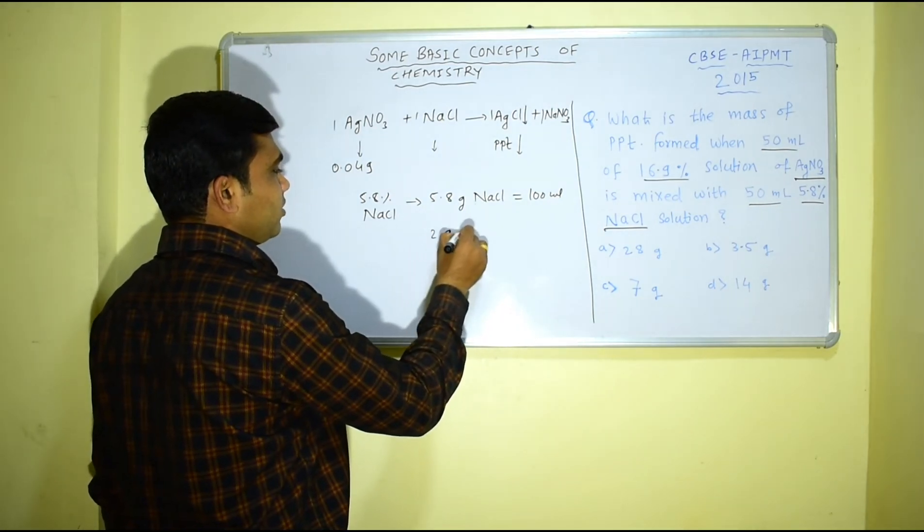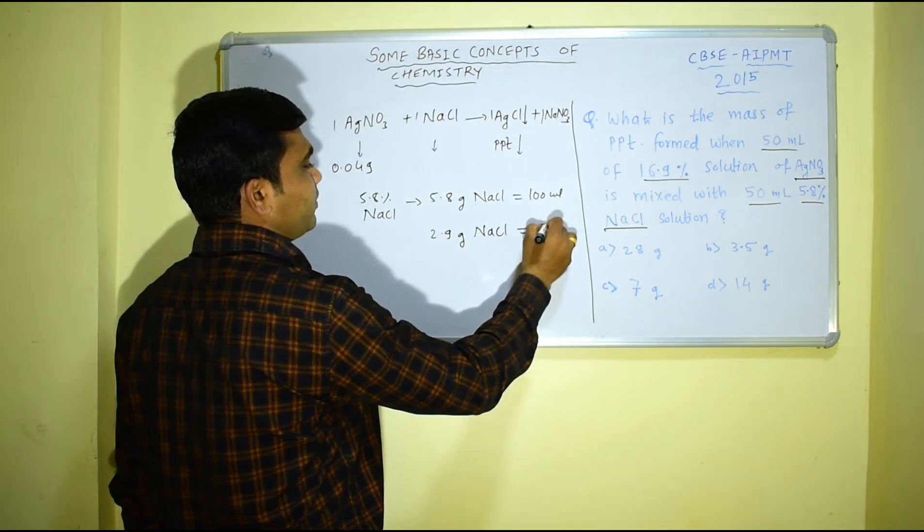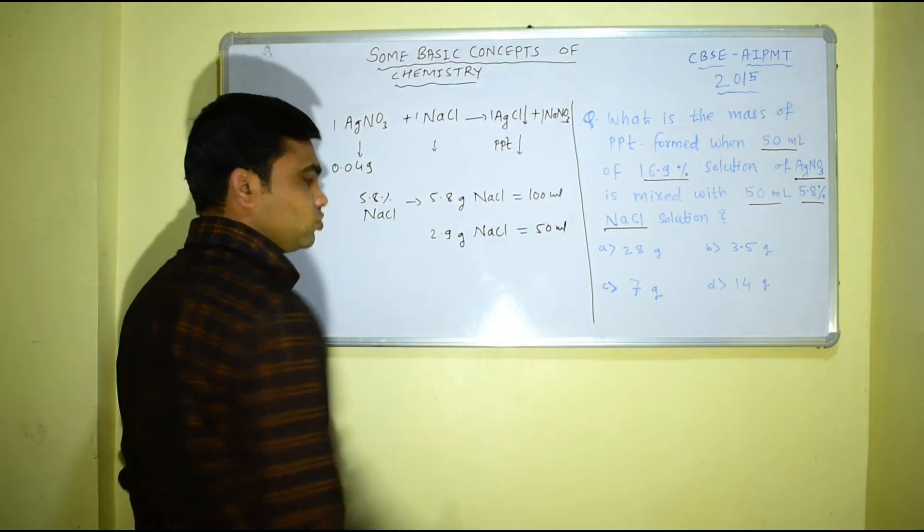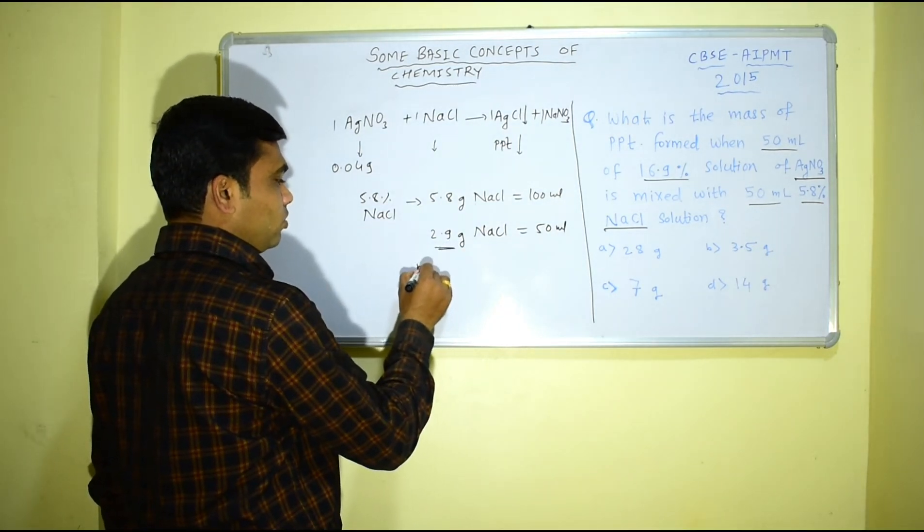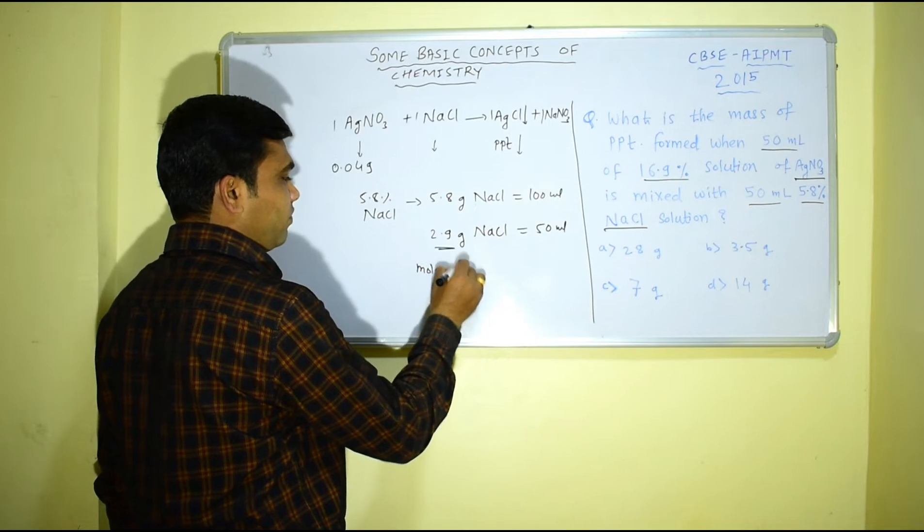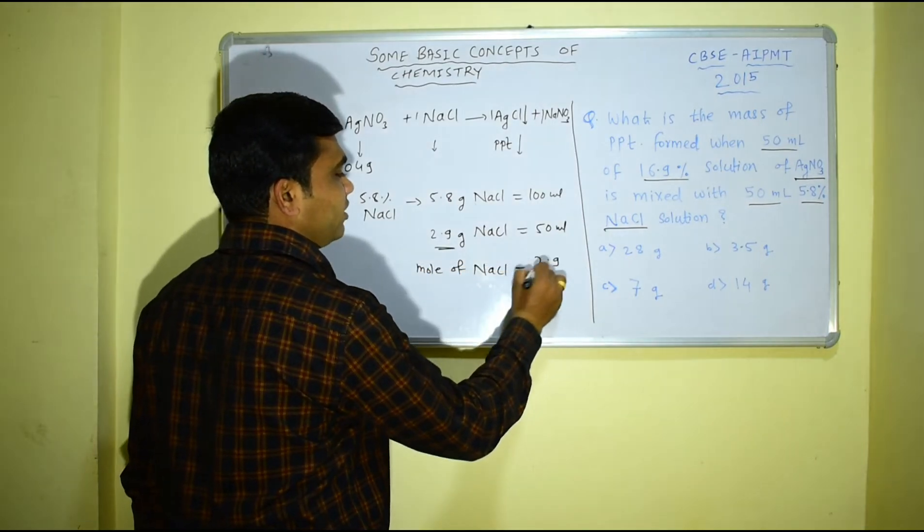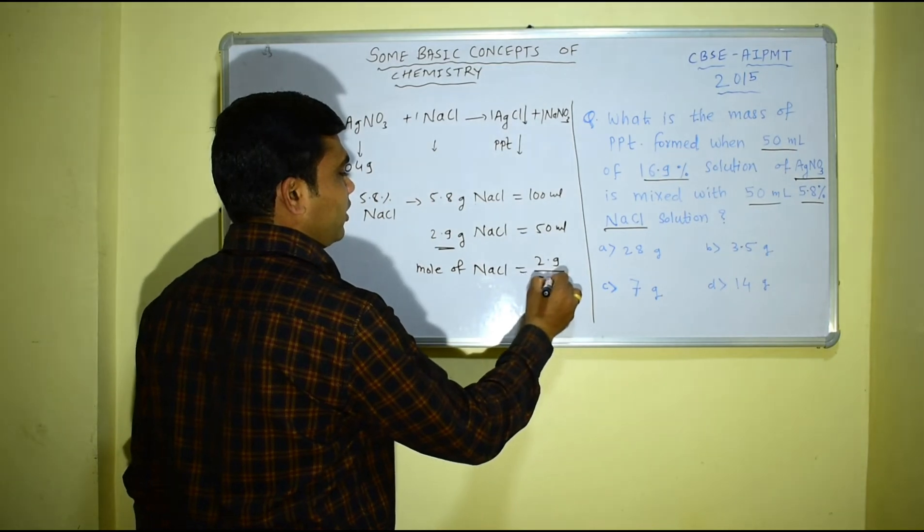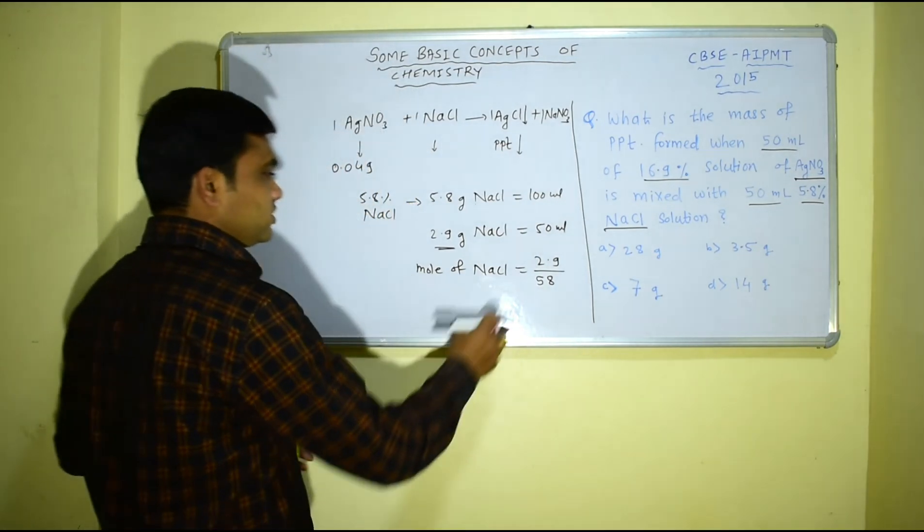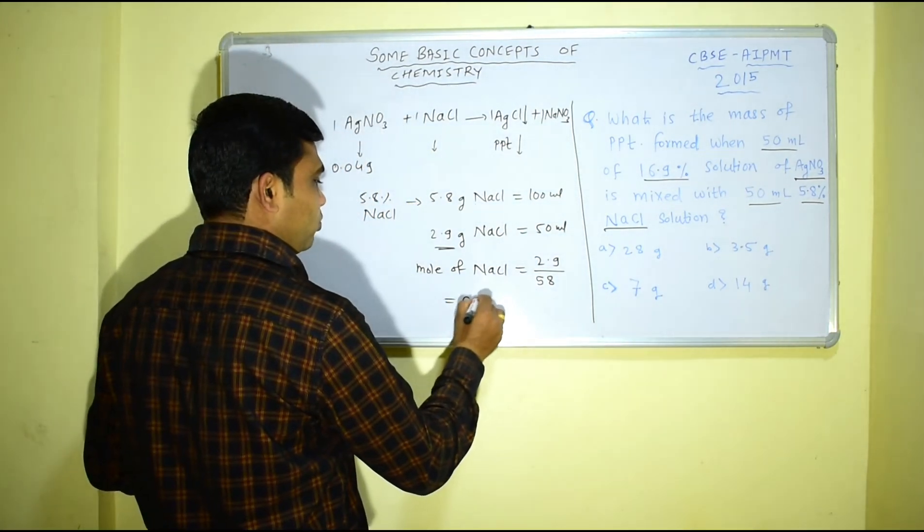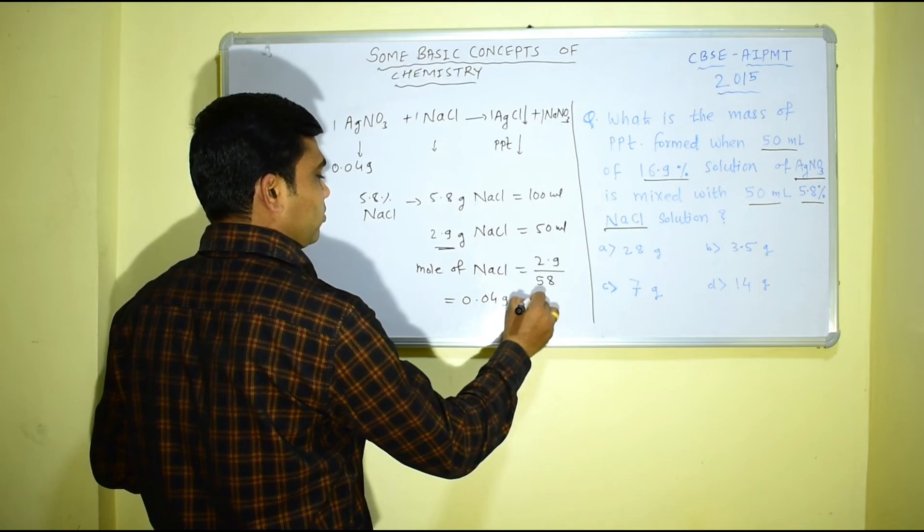And this 2.9 gram corresponds to moles of NaCl: mass by molar mass, that is 2.9 divided by 58, which is the molar mass of NaCl. So from this again you will get 0.049 moles.